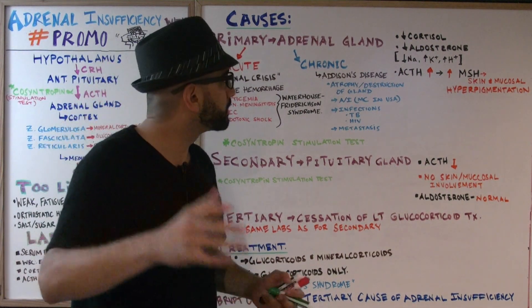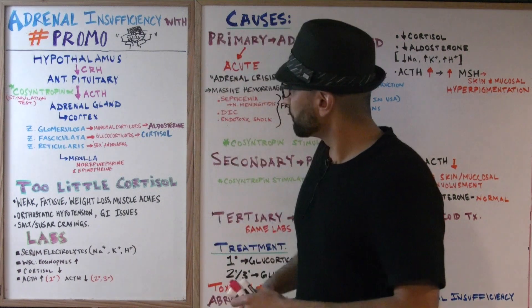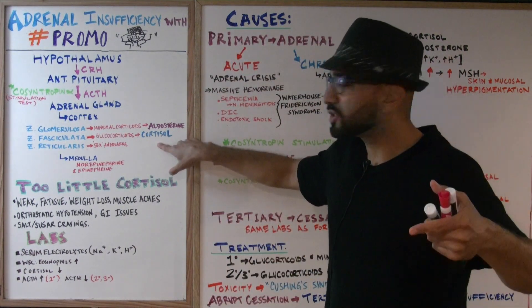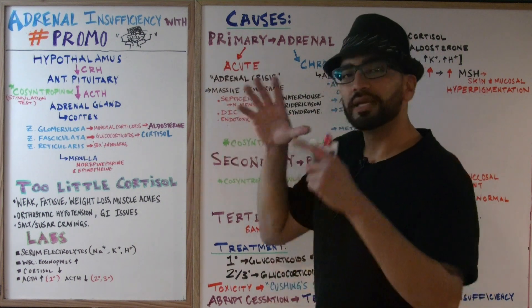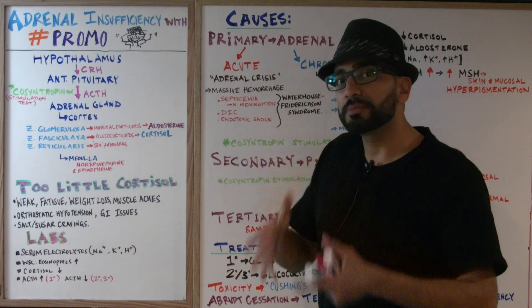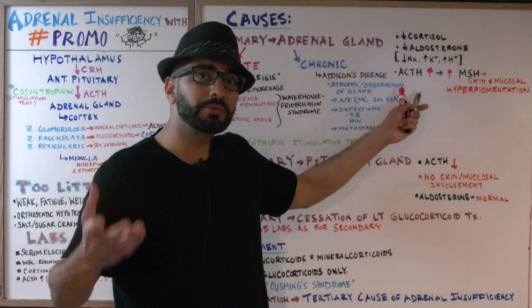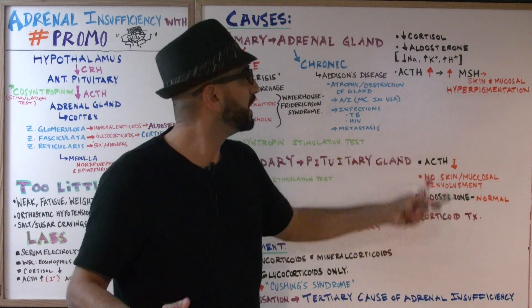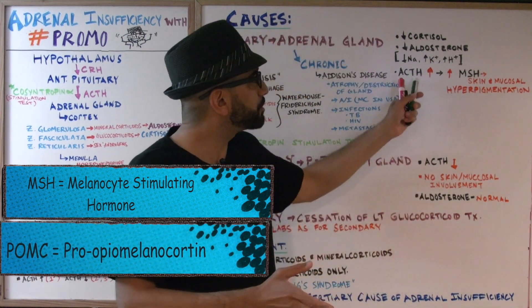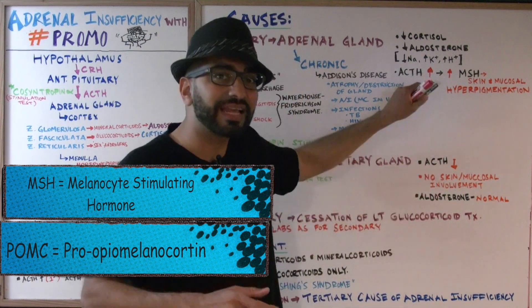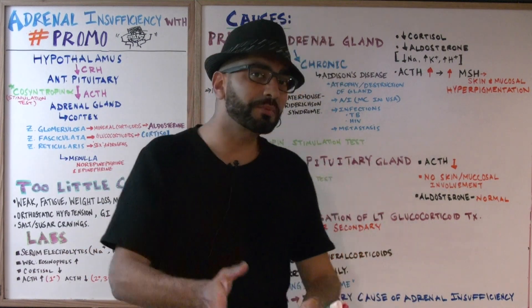That's why checking the labs is essential. ACTH levels will be increased in primary adrenal insufficiency because without cortisol, the negative feedback loop tells the hypothalamus and anterior pituitary to produce more ACTH. Elevated ACTH causes increased MSH (melanocyte-stimulating hormone), which is a byproduct of ACTH production from POMC. This MSH causes skin and mucosal hyperpigmentation — a unique feature seen only in primary adrenal insufficiency.